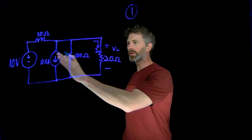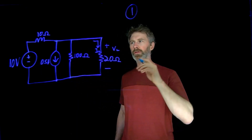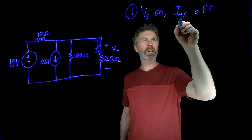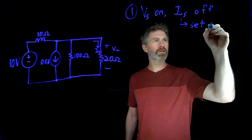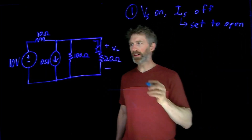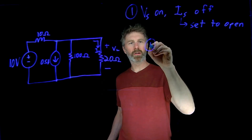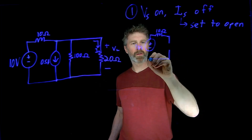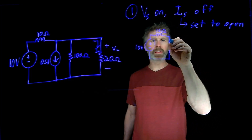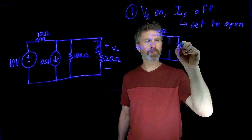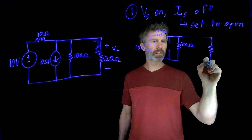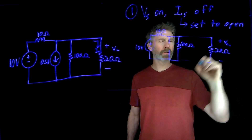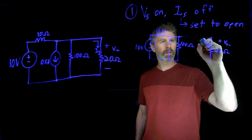We're going to look at two cases: voltage source on with current source off, then current source on with voltage source off. When you're turning a current source off, you set it to an open. So the new circuit we're going to analyze has our 10 volt source, the 10 ohm resistor, the current source is now an open so it's not there anymore, but we still have the 100 ohm resistance and the 20 ohm load. We want to find the voltage across that 20 ohm load and the current through it when VS is on.